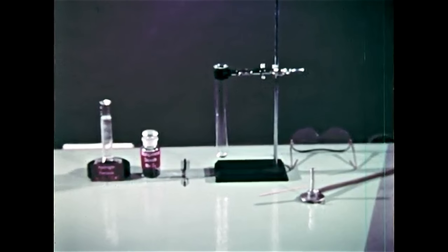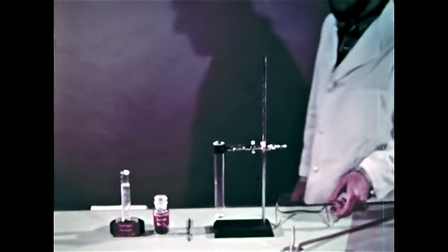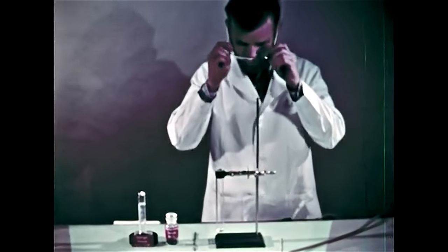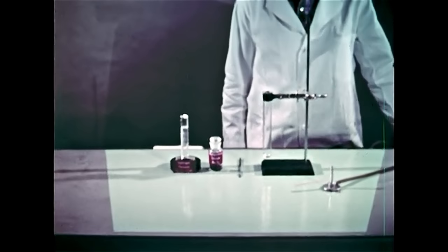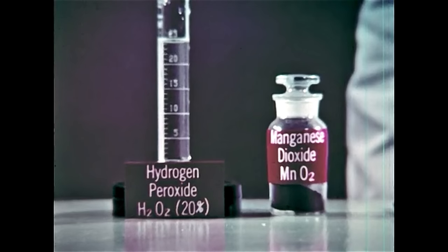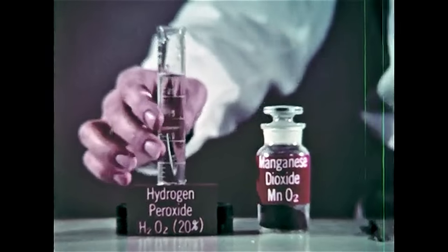This time we'll collect oxygen from a stable liquid using a catalyst. Although there are still unknowns in the catalytic process, it is thought that the catalyst provides handholds for the reactants to grab onto. We're using hydrogen peroxide for the liquid and manganese dioxide as the catalyst.